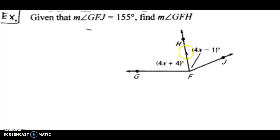We take this angle here, the 4x plus 4. We're going to add it to this angle of 4x minus 1 to equal the whole thing. The whole thing we're given up here is 155. So that's our algebra to set it up. We take angle GFH, 4x plus 4, and add it to angle HFJ, that is the 4x minus 1, to equal the whole thing, which was the 155.